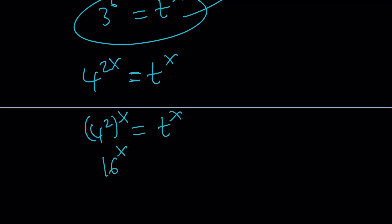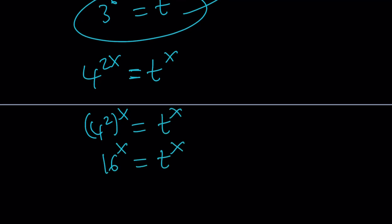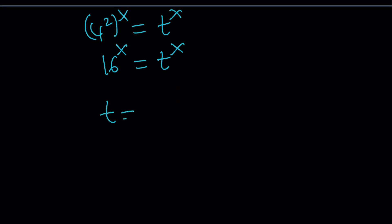Therefore, from here, t becomes 16. But of course, x should not be 0, so on and so forth. But we know that it's not. So under those conditions, t equals 16 should be okay.